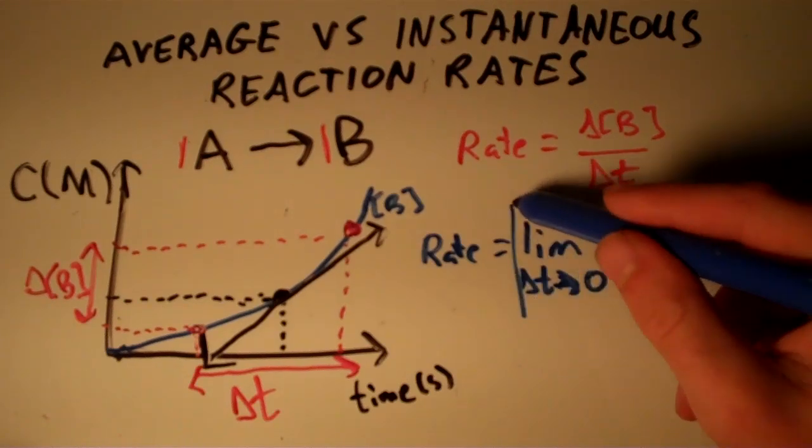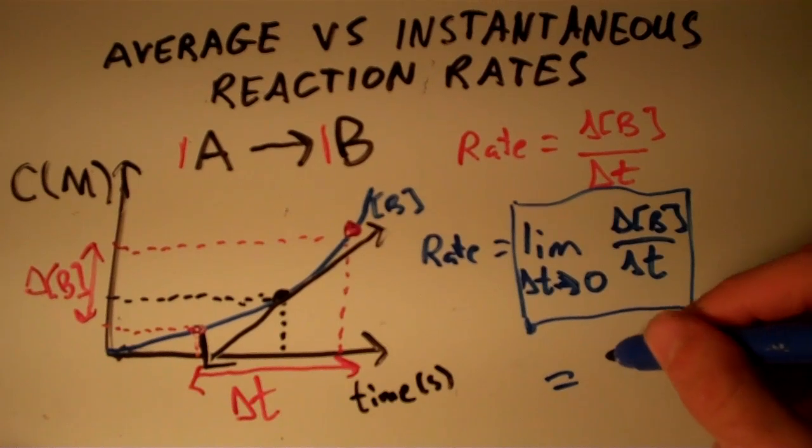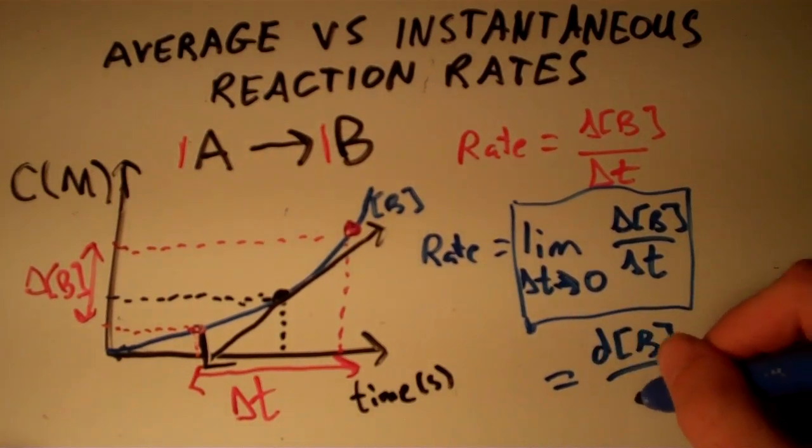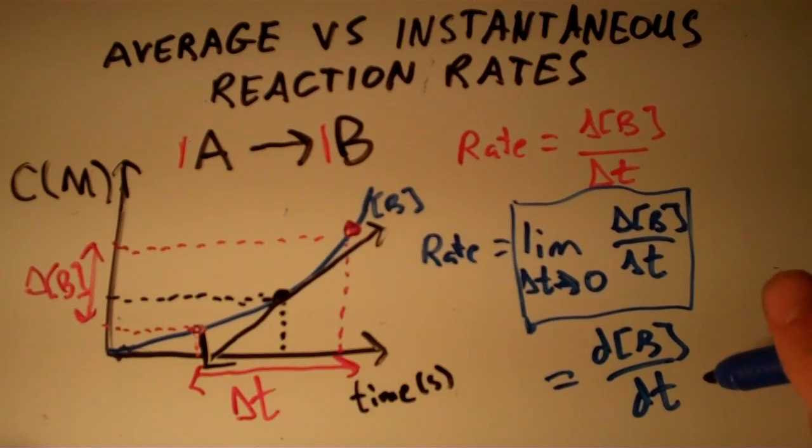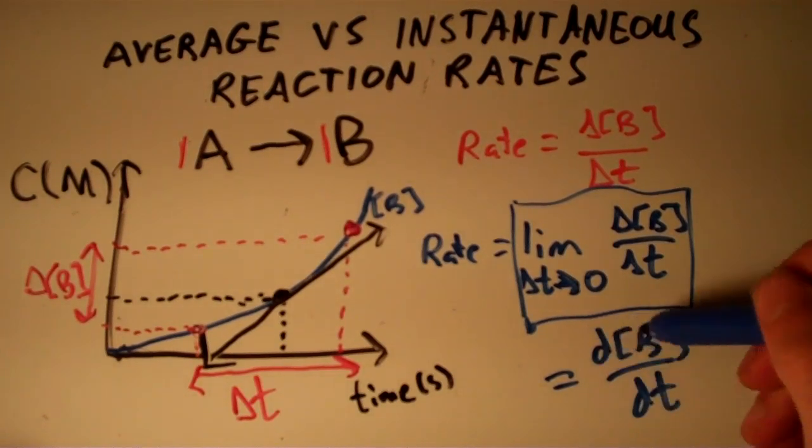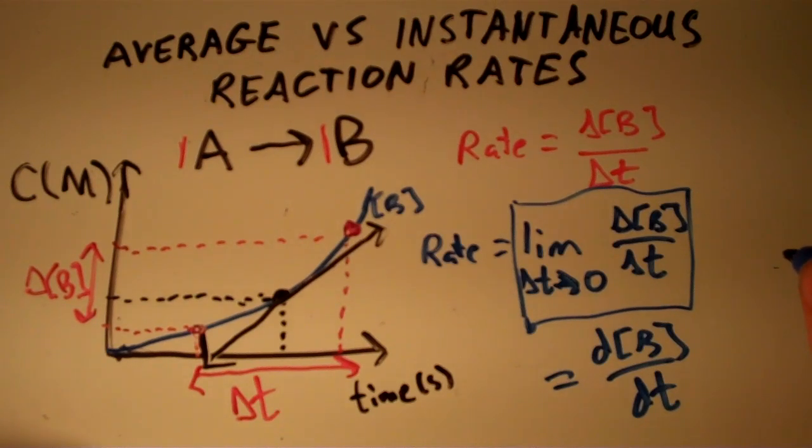This whole term here can also be expressed as d[B]/dt, where the lowercase d means that it's a differential, so it's an infinitesimal change in these two quantities. If that's over your head right now, don't worry about it. But that's basically what defines an instantaneous rate of chemical reaction.